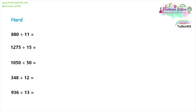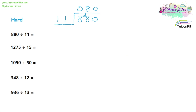Some slightly harder questions now — same method, but a little bit harder. 888 divided by eleven. How many elevens will go into eight? That is zero, and we carry the eight over. How many elevens will go into eighty-eight? That gives us eight. And how many elevens will fit into zero? And that gives us zero.